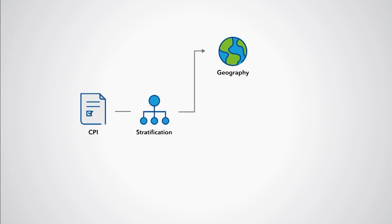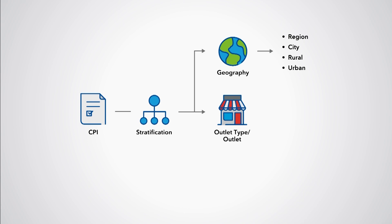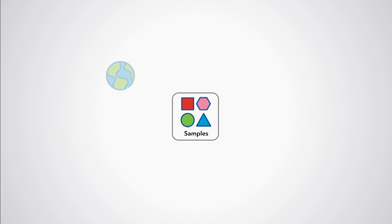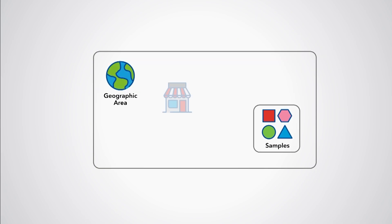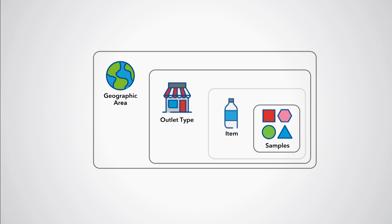Stratified systematic random sampling is a sampling technique in which systematic random sampling is conducted independently within each of the predefined strata. Stratification can be applied to each of the different samples relevant for the CPI. In practice, the CPI is typically stratified by geography, such as region, city, rural, or urban, by type of outlet, or by outlet and by item. Samples are then set up within each geographic area for each of the different outlet types and for each item within the outlets.